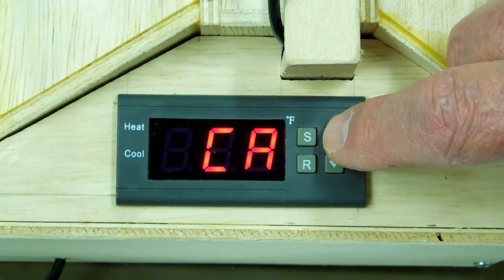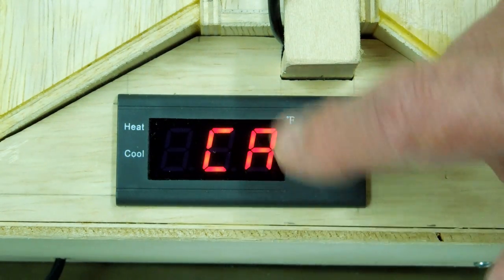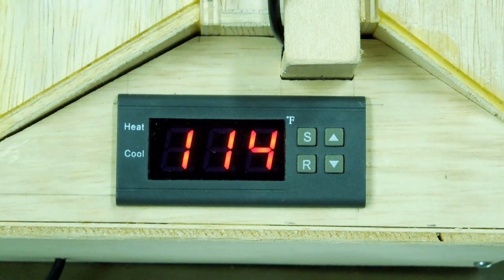CA is a temperature correction. If the probe is a bit off, you can correct that. And if I hit reset, we're back to reading the actual temperature.